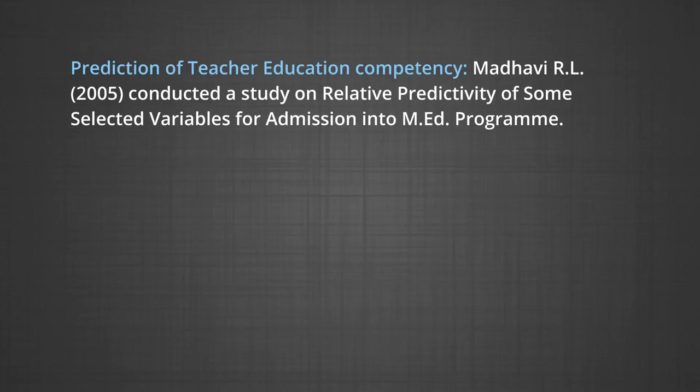Prediction of teacher education competency: A study was conducted on relative predictivity of some selected variables for admission into an M.Ed program. The study arrived at the following findings. Finding 1: Research aptitude, educational management aptitude, adjustment capacity and teacher education disciplinary profile have been found to be significant predictors of teacher education proficiency in the western region of India, wherein research aptitude, adjustment capacity and teacher education disciplinary profile were found to be predicting positively and significantly, and educational management aptitude negatively.